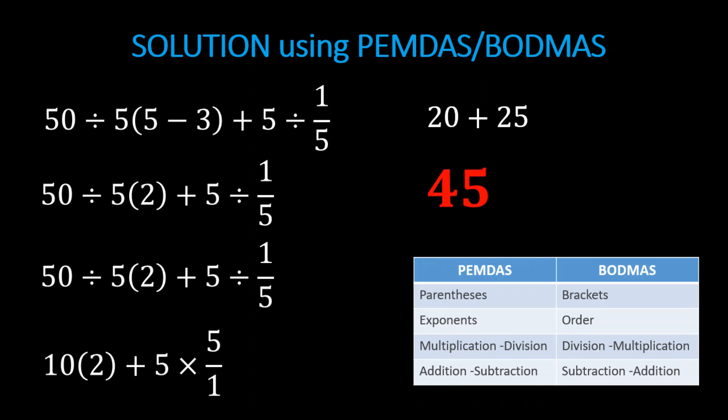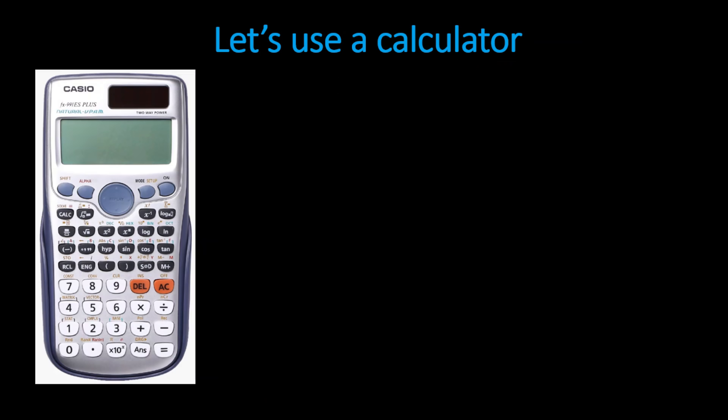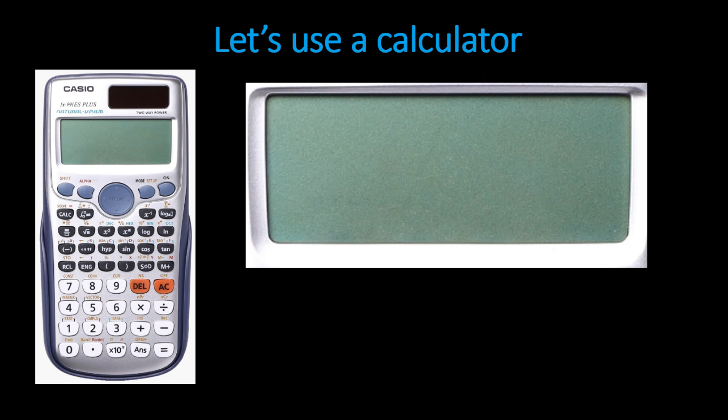Now to check this, let's use a Casio calculator. To be specific, encode the problem: 50 divided by 5, parenthesis 5 minus 3, plus 5 divided by the fraction 1 over 5. And then let's press the equal sign. Okay, the answer is 30. How did this happen? I thought calculators don't make mistakes.